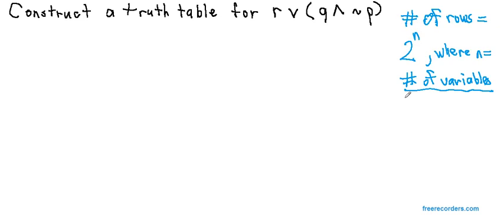So in this problem, since we have three variables P, Q, and R, n equals 3, and our number of rows is 2 to the third power, or 2 times 2 times 2, which is 8.